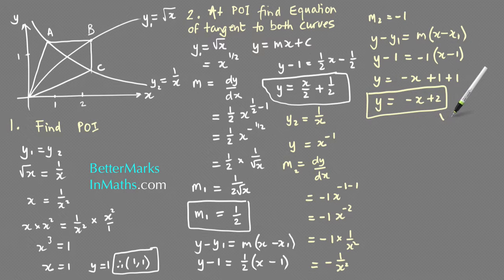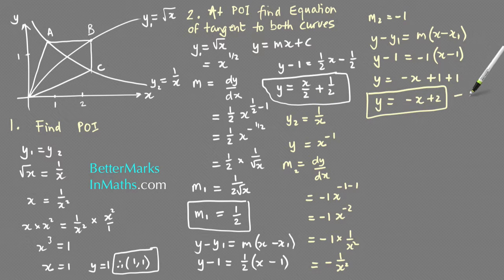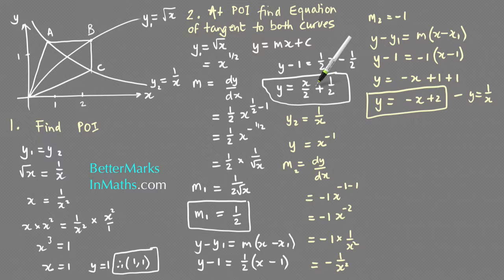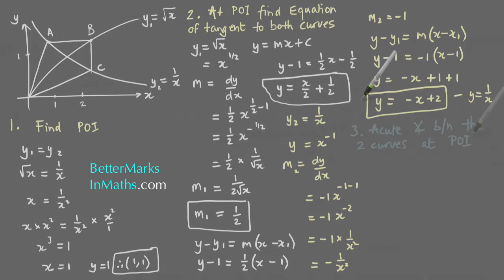So the two tangent equations are: y equals minus x plus 2, which is the tangent to y equals 1 on x; and y equals x over 2 plus one half, which is the tangent to y equals the square root of x.